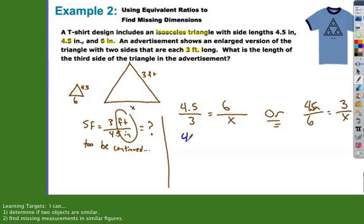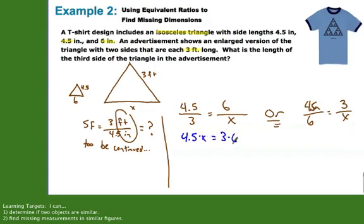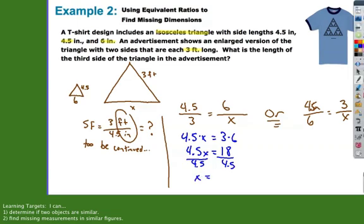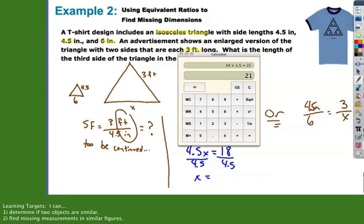Let's do a little math here. Divide both sides by 4½, and x equals, pull my calculator out for this one. 18 divided by 4½ is 4. Look at your units here. I have 3 feet out of the units of my new triangle, so it's 4 feet.